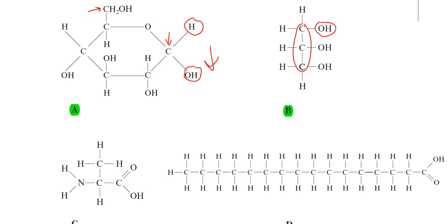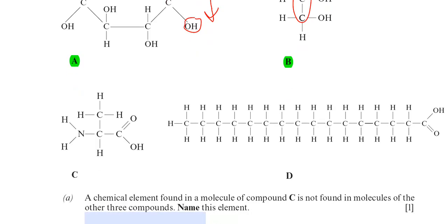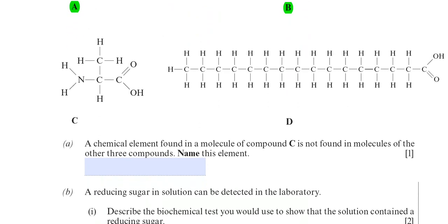Moving down to compound C — it has on one end a carboxylic acid group, and on the other end is the NH2 group, which is the amino group. So this can only be an amino acid.